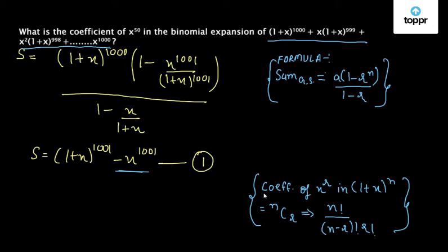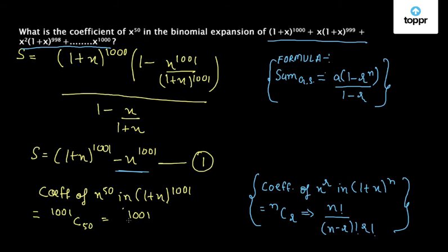So the formula for finding the coefficient of x^r in (1 + x)^n is equal to nCr, which transforms to n factorial upon (n - r) factorial times r factorial. Similarly, we can say that coefficient of x^50 in (1 + x)^1001 would be equal to 1001C50, which equals 1001 factorial upon (1001 - 50) factorial times 50 factorial.